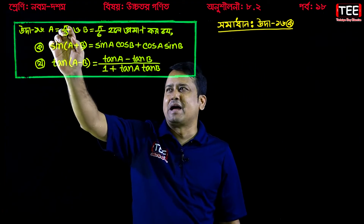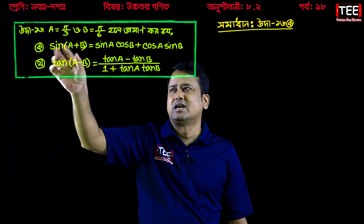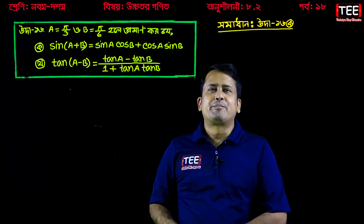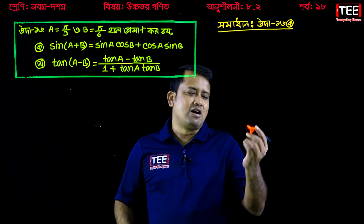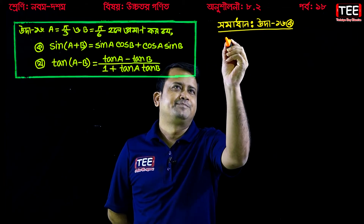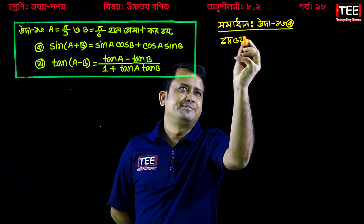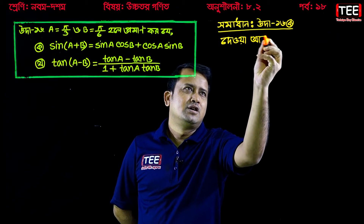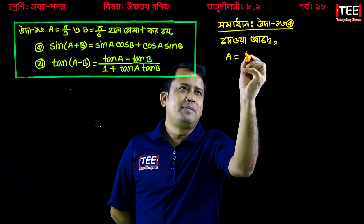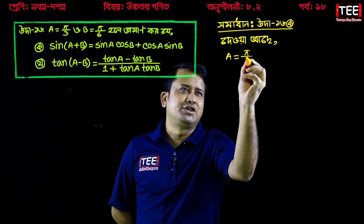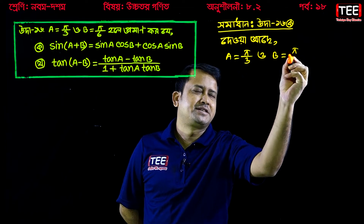So a is pi by 3 and b is pi by 6. Let's write: a is equal to pi by 3, and b is equal to pi by 6.